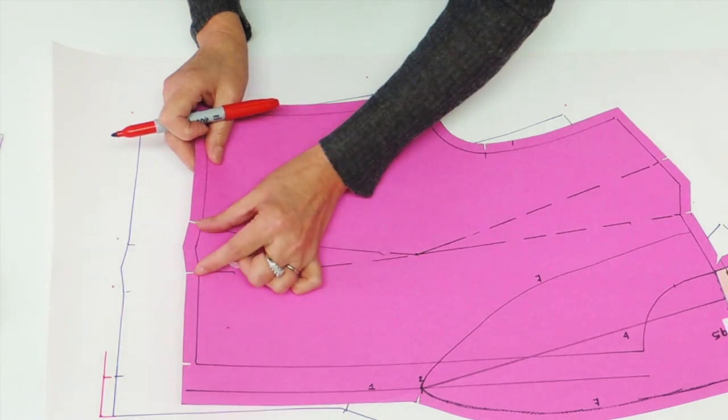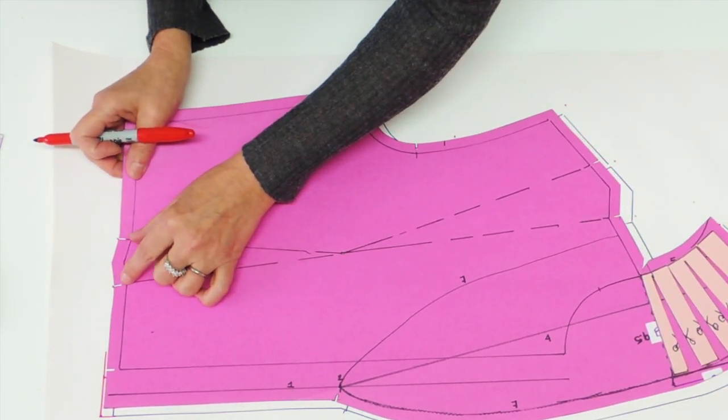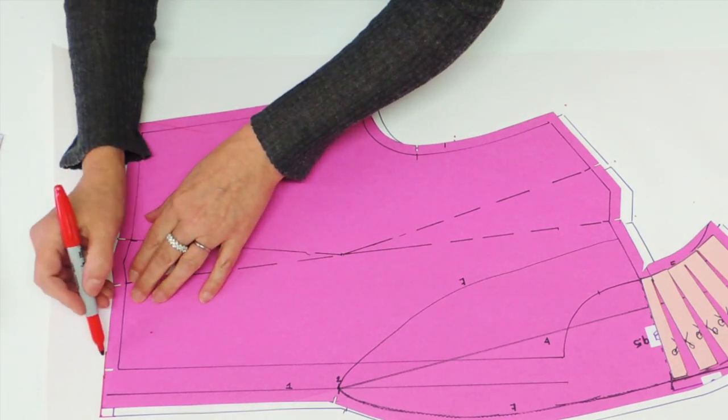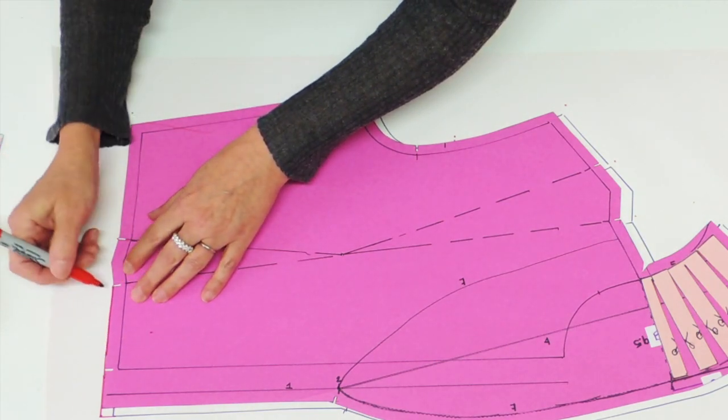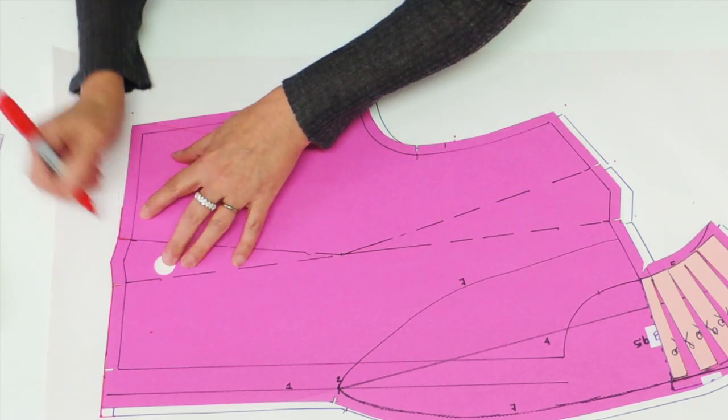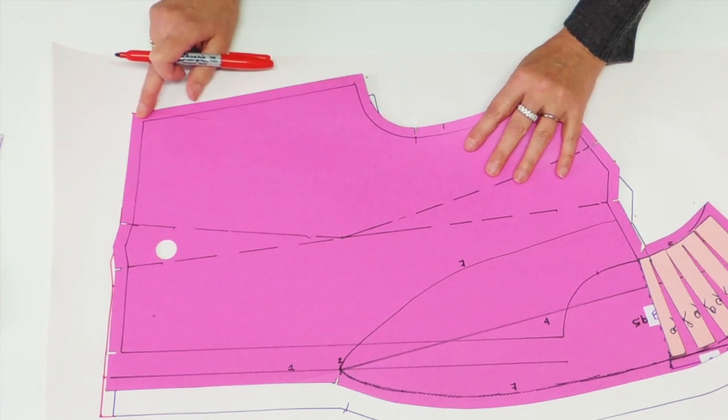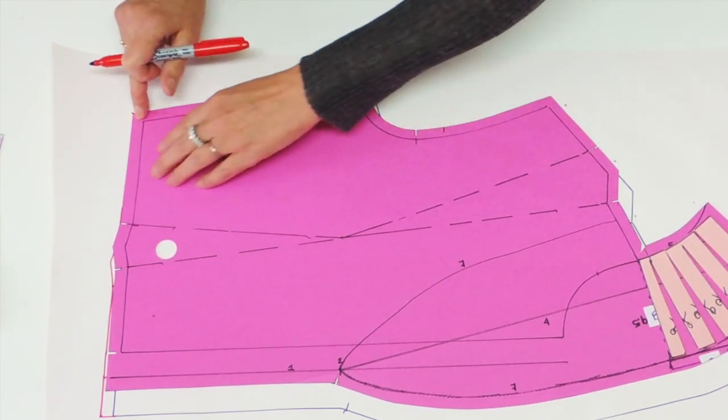Then what you're going to do, you're going to place the two notches of the dart on the two reference points. And you're going to trace from where you stop the notch, the jog, and the other notch and trace for a little while. Put the corner on the next point and finish your line.